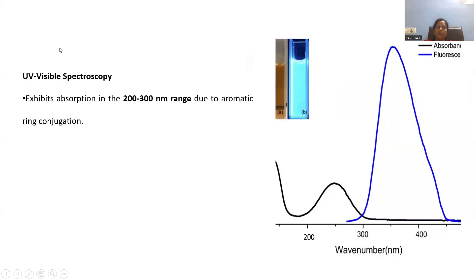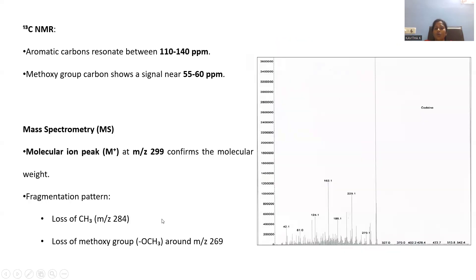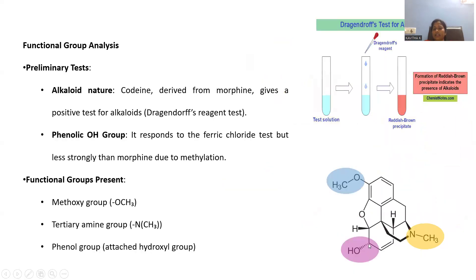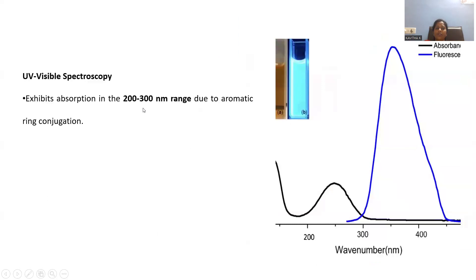Another tool is UV-visible spectroscopy, which is characteristic for the presence of conjugation. The UV-visible absorption for codeine appears in the range of 200 to 300 nanometers, indicating the presence of aromatic ring conjugation. Among the ring systems, only the aromatic ring has conjugation — three double bonds are in conjugation — and that distinguishable peak appears in the range of 200 to 300 nm for the codeine molecule.